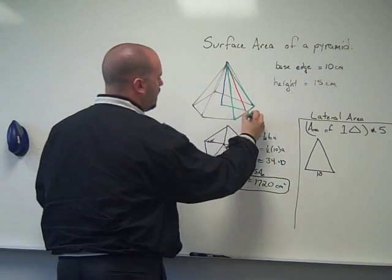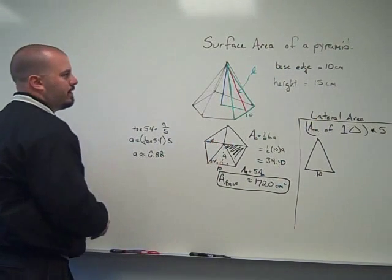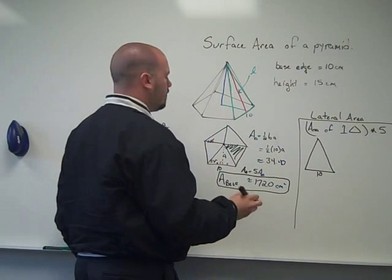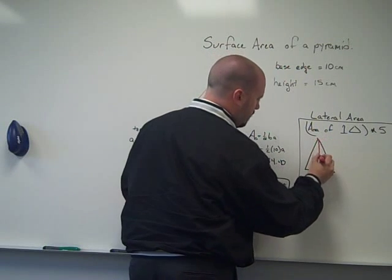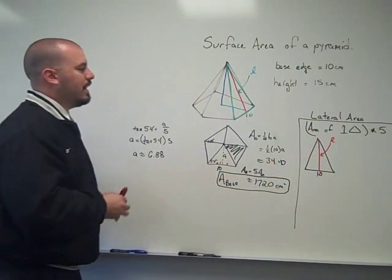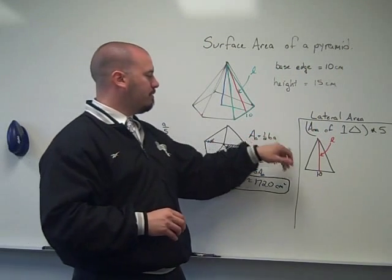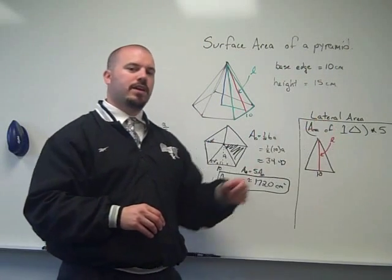So it's got a base edge of 10, and that length, the red segment, the slant height is going to be using, so draw it in red. If I can find my slant height, then I would have enough information using one half of base times height to find the area of that triangle.